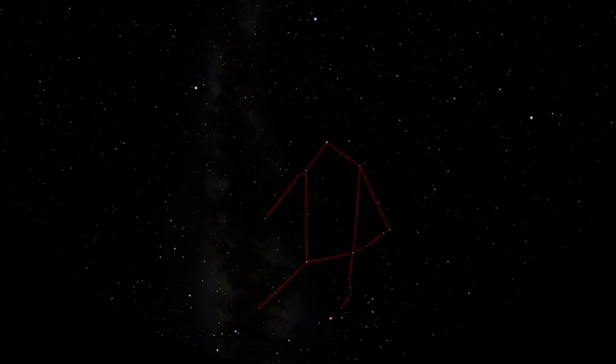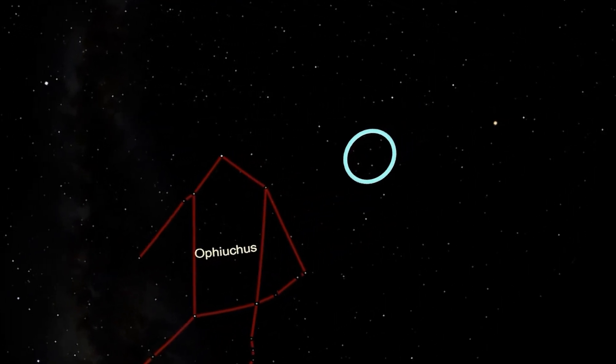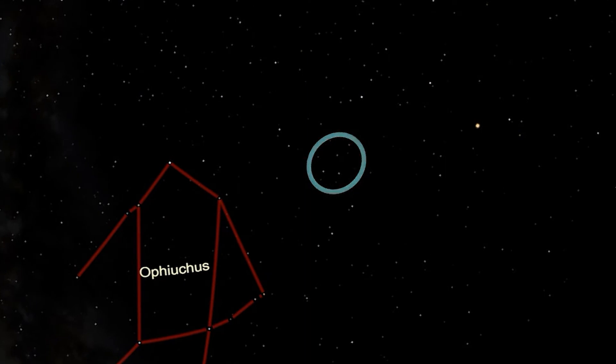Ophiuchus means the Serpent Bearer, so it's no surprise that the next constellation is a snake. Serpens is unique among the constellations because it's the only one that's divided into two non-contiguous parts. To the west of Ophiuchus is the head of the snake, Serpens Caput. The head starts in a triangle of faint stars, and then the body extends down to the bottom of the circle portion of Ophiuchus.